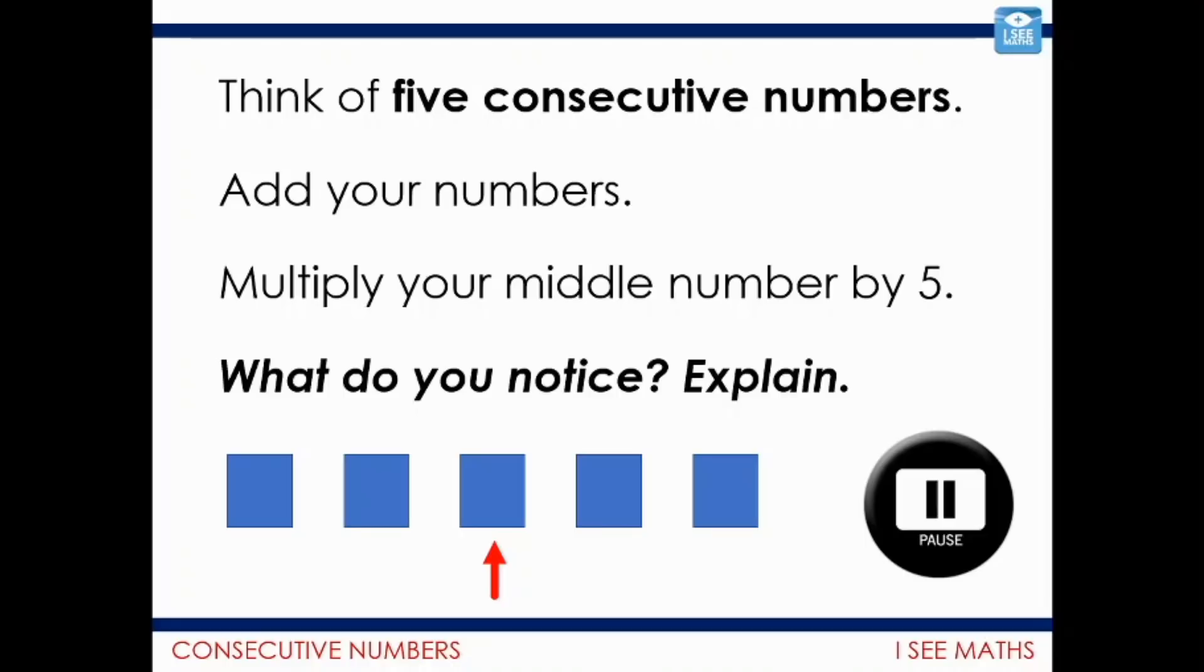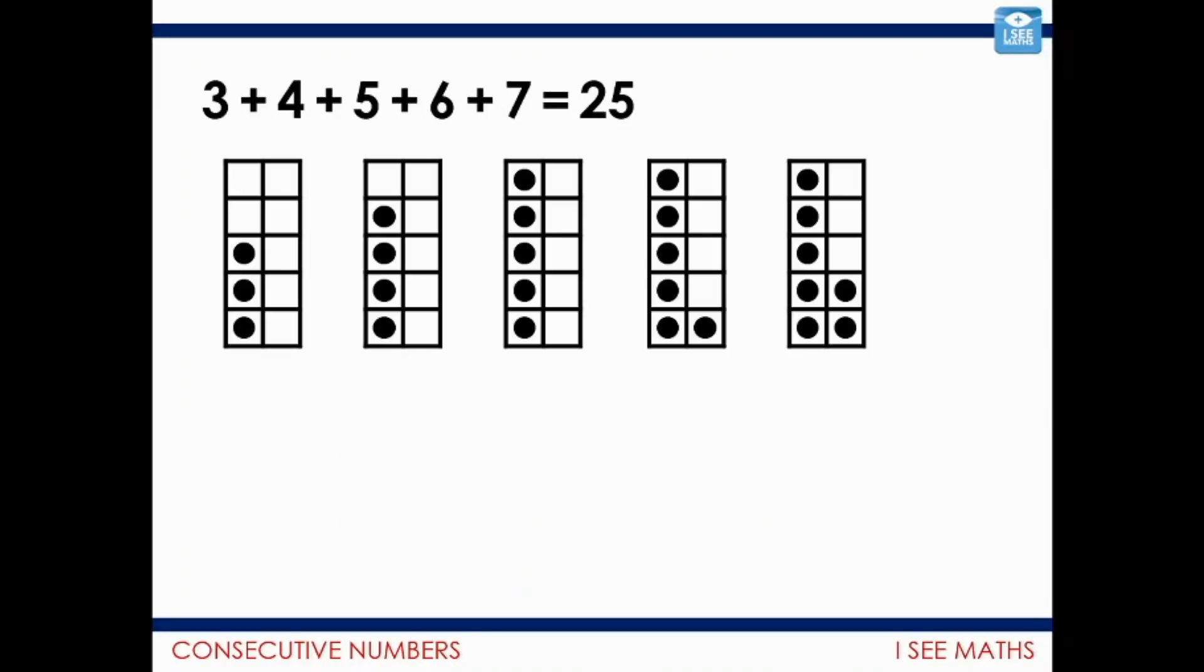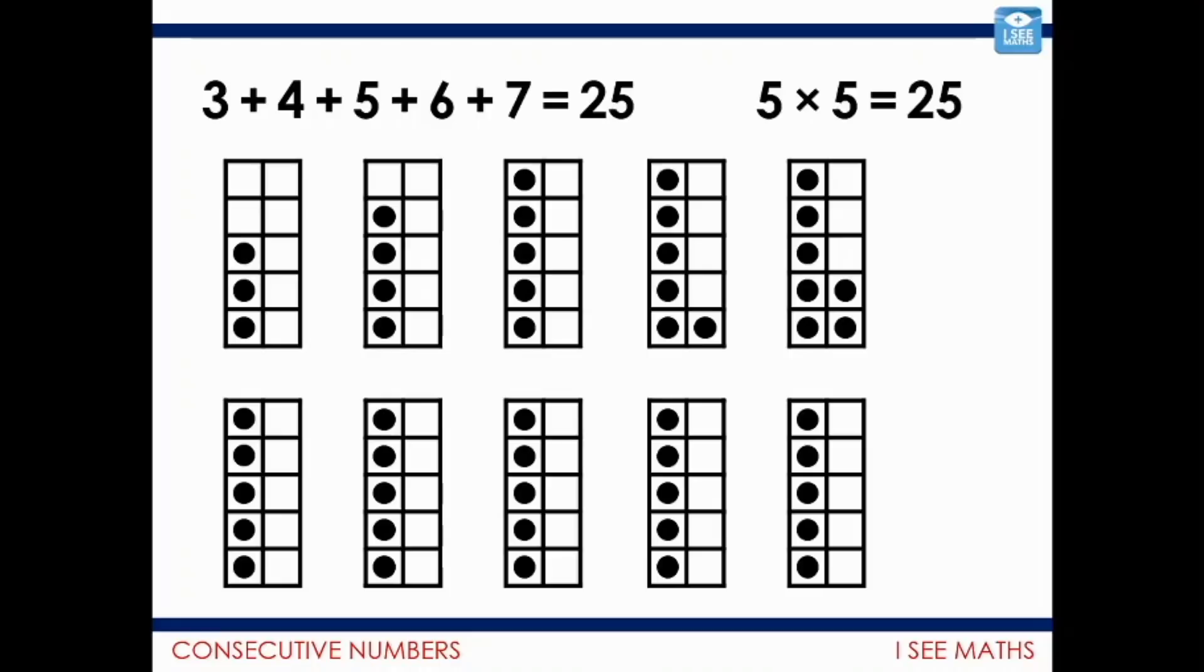It's a beautiful idea to have a look at. So let me give you an example. Let's say you'd gone for three, four, five, six, and seven. That is a sum of 25. I've represented the quantities there. But actually, my middle number, of course, there is five. And if I have five lots of five, it looks like this. And of course, it gives me the same amount.